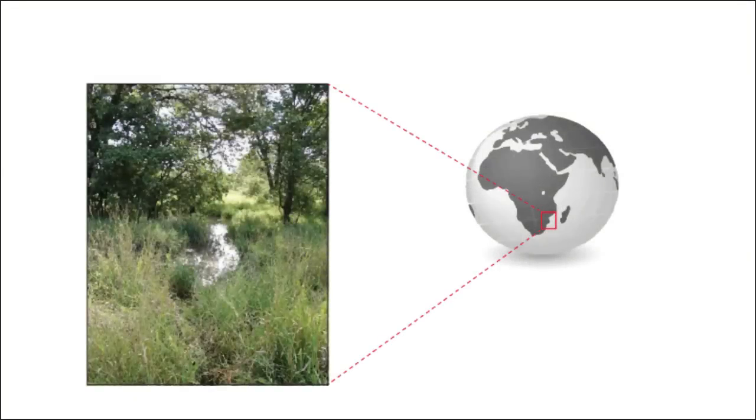The African turquoise killifish normally lives in ephemeral ponds in Africa, in Mozambique and Zimbabwe, and it lives in those ponds that are only present for four months at a time during the brief rain season.